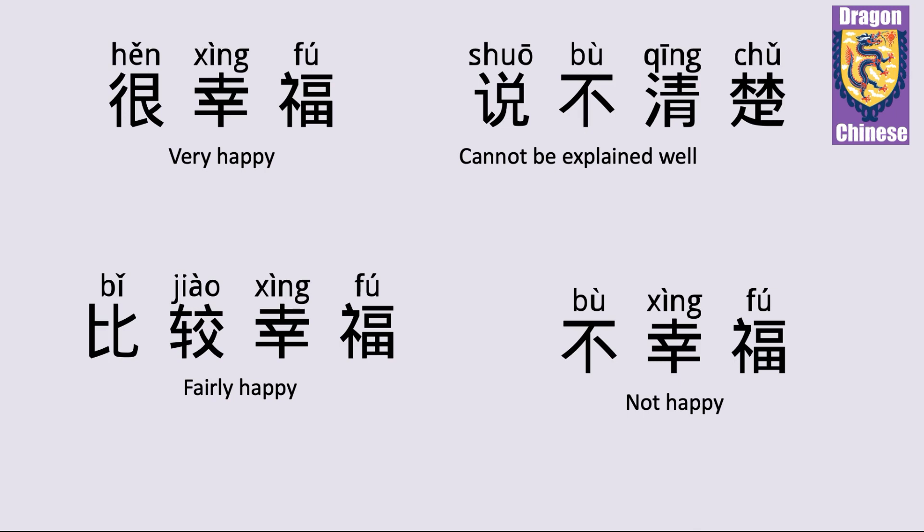很幸福 — very happy. 说不清楚 — cannot be explained well. 比较幸福 — fairly happy. 不幸福 — not happy.